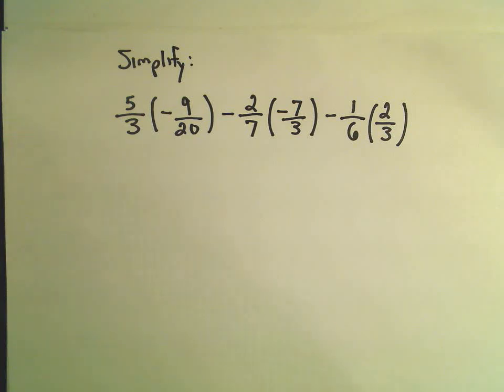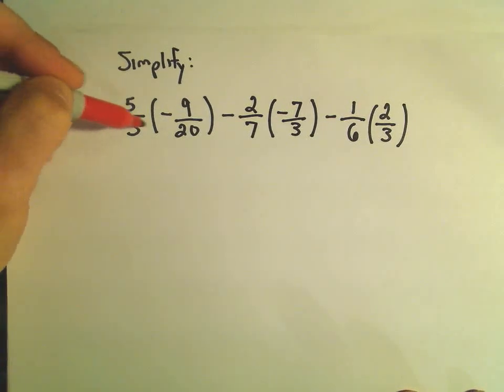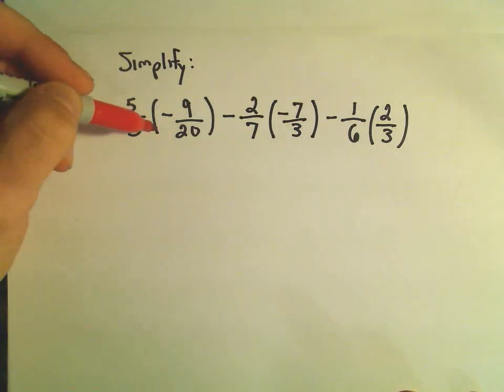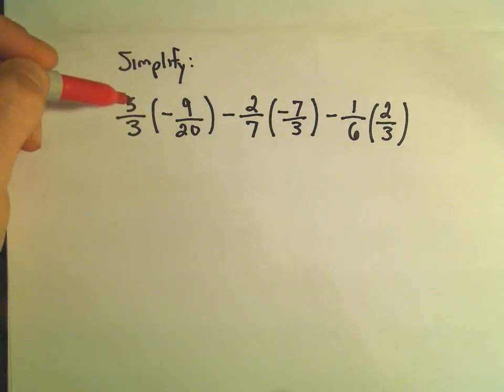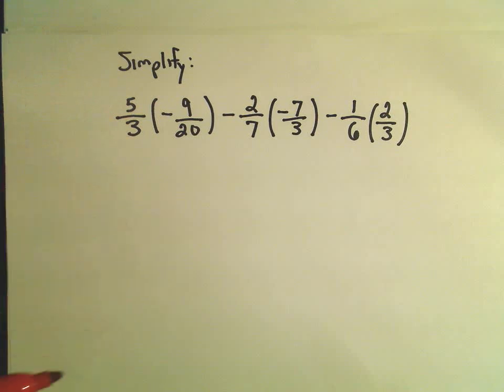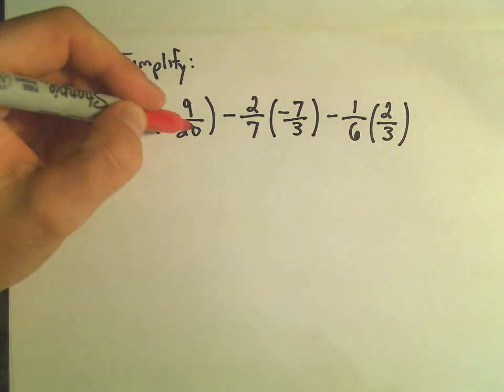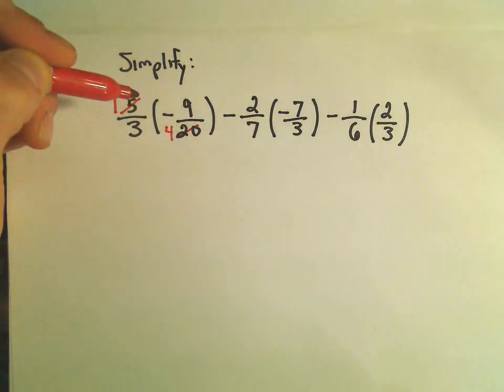And usually to me it speeds things up a little bit. So I look in the numerator, I see there's a 5 in the numerator. I look at the denominator, I see a 20. I think, can I cancel anything out? What's the greatest common factor of 5 and 20? Well, the greatest common factor of 5 and 20 is 5, so 5 divided by 5 is 1. If you take 20 and divide it by 5, we'll get 4.